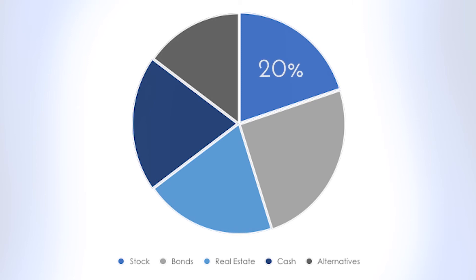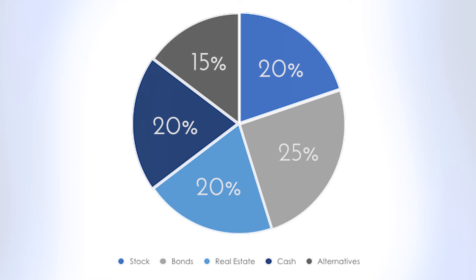The risk-averse investor would have about 20% stock, 25% bonds, 20% real estate, 20% in cash — which can be things like liquid fixed annuities, money markets, things like that. We call these cash and cash equivalents. And 15% alternatives.